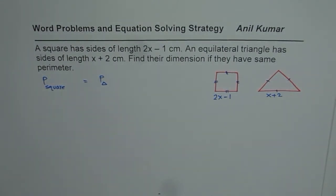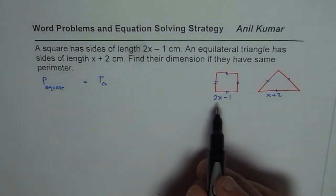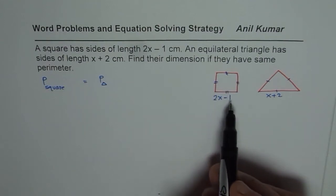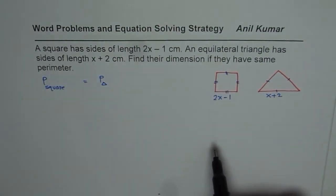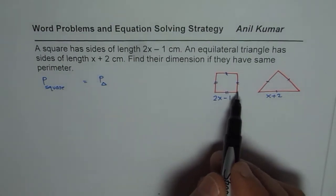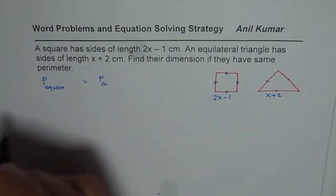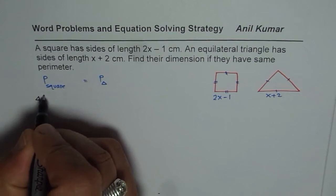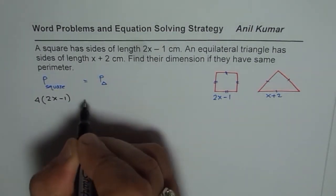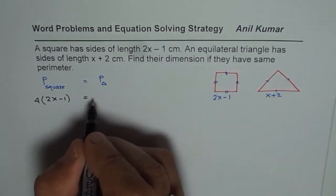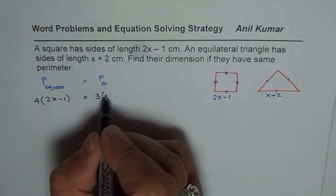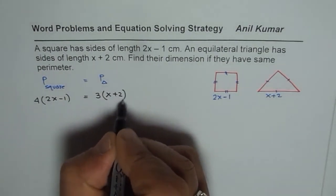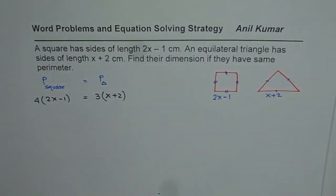So let us write down the equations which will relate the two perimeters and then solve them to find the value of each side length. What is the perimeter of square? It is 4 times each length, so the perimeter of square is 4(2x-1). Perimeter of triangle, which has 3 equal sides, will give us 3(x+2). So that is how these two perimeters are related.